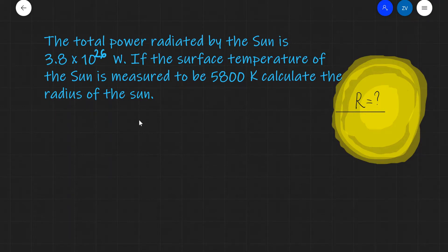The total power radiated by the sun is 3.8 × 10²⁶ watts. If the surface temperature of the sun is measured to be 5,800 Kelvin, calculate the radius of the sun.